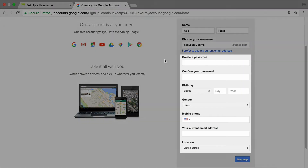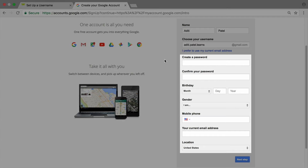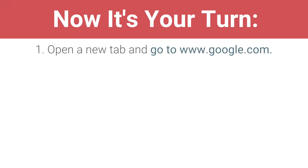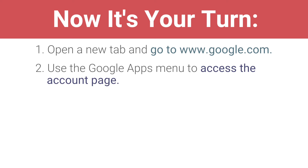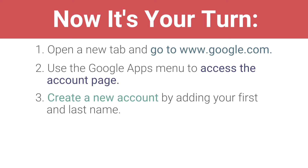Great job! There are a few more steps to complete before you should submit the form. Move on to the next video to create a strong and secure password for your Google account. Now, it's your turn. Open a new tab and go to www.google.com. Use the Google Apps menu to access the account page. Create a new account by adding your first and last name. Choose a username. Move on to the next video.